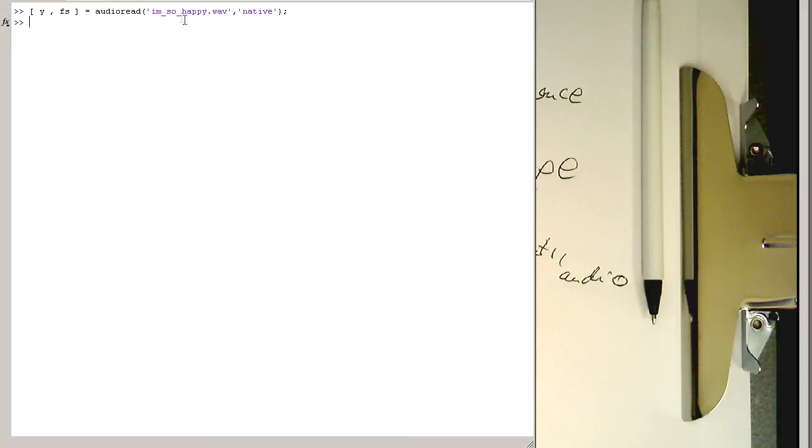So now the interesting addition here to this command is this argument called native. So this argument native here loads the data in the native form, how it has been stored in the wave file.